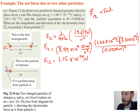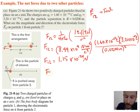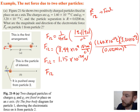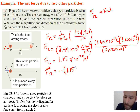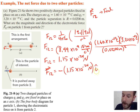This is the non-vector form, so we want to convert to vector form. Since the force is to the left, which is the negative x direction, in vector form it becomes negative 1.15 times 10 to the negative 24 newtons times î, where î is the unit vector in the x direction.